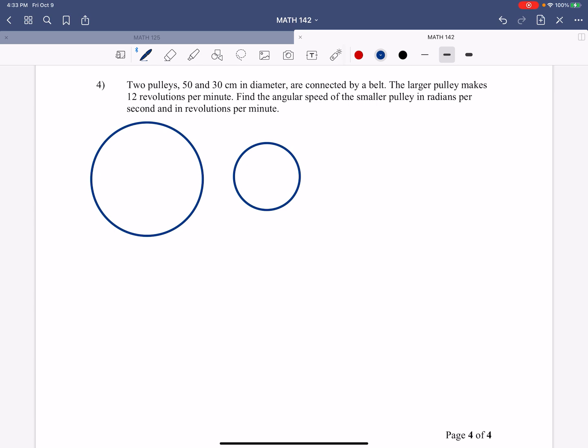So looking at that, we'll just pretend that that's 50 and 30. So this one has a radius of 50, this one has a radius of 30, and they are connected by some belt. So it turns out the belt doesn't really make a difference here.